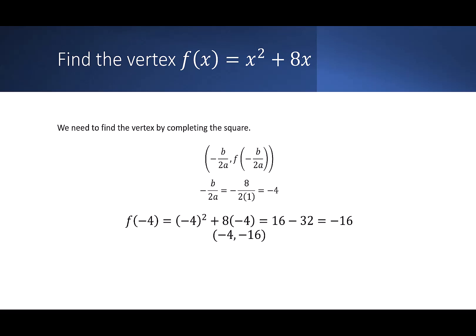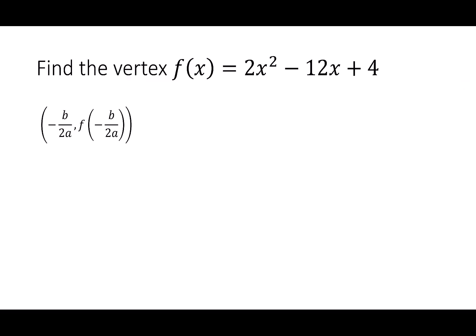And maybe completing the square doesn't sound too bad when we first look at it, but the problems are going to get more complicated as we put in other coefficients for x². So let's look at f(x) = 2x² - 12x + 4. And we're going to find the vertex using our shortcut of -b/2a, f(-b/2a).